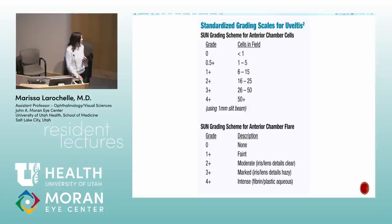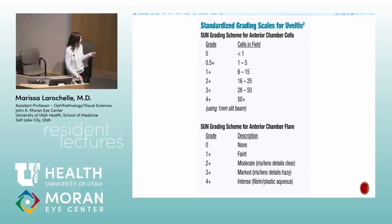Flare grading is based on the amount of detail obscured — how well you can see the iris and lens. These are pretty subjective: kind of hazy, hazy, very hazy.